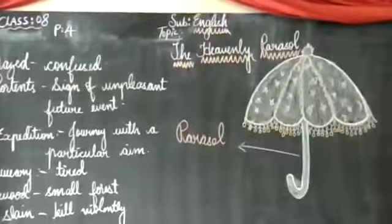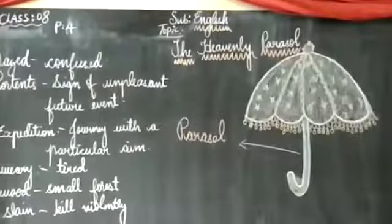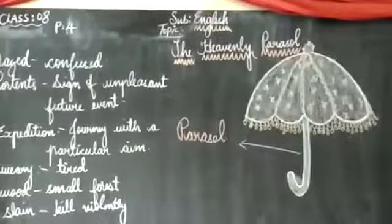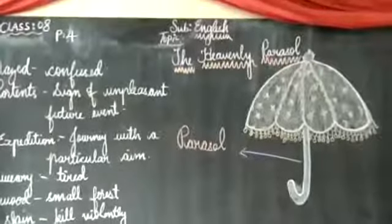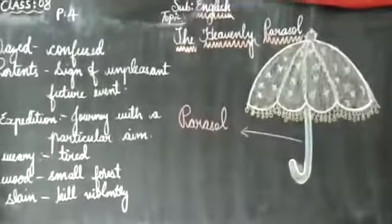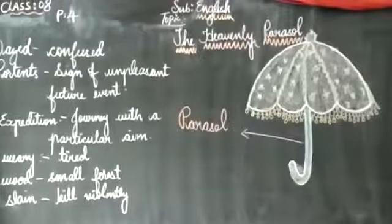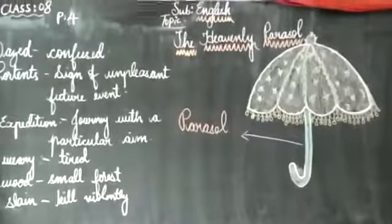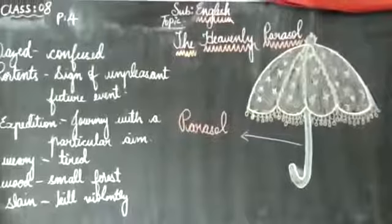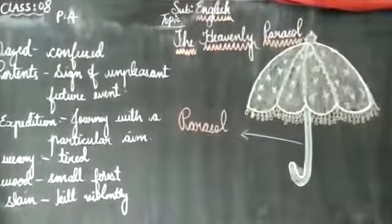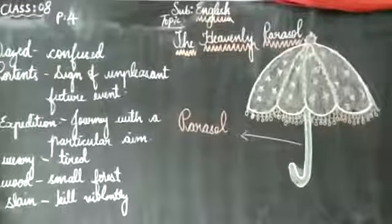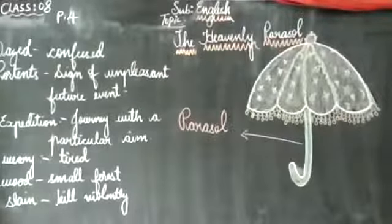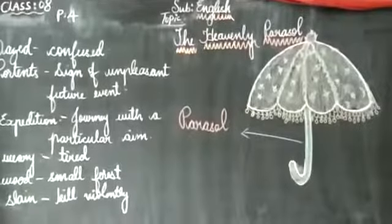So, now your work is to write down the glossary which is given on page number 5. And afterwards, just below the glossary, you can find the heading comprehension. Under that exercise A, answer the following questions in one or two sentences each. I want you all to write down this in your classwork itself. You will write the notes and the homework in the note classwork only. Thank you.